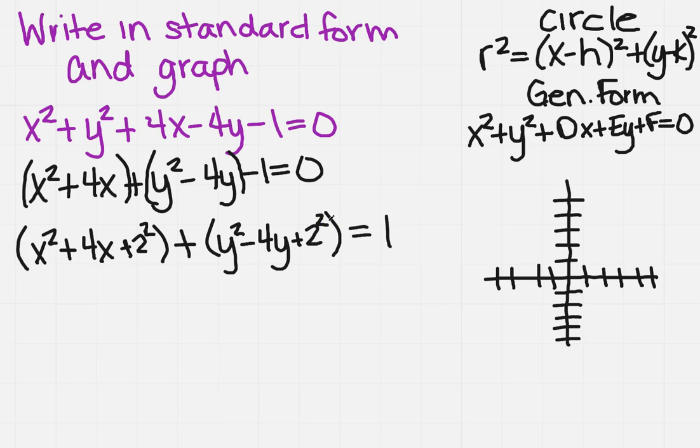So now I can rewrite the first one as x plus 2 squared plus y minus 2 squared equals. Now, remember we did add 2 squared and 2 squared, so I need to add that to the other side. Because whatever you do to one side, you have to do to the other side.